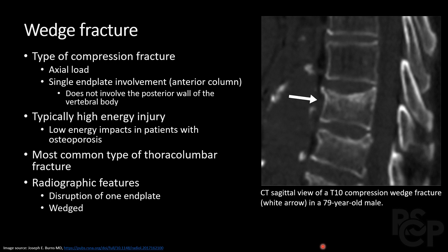Wedge fractures are typically only involving the anterior column, and you can see here how it is anteriorly wedged. This is by far the most common type of fracture, and radiographically it appears as a wedge shape.